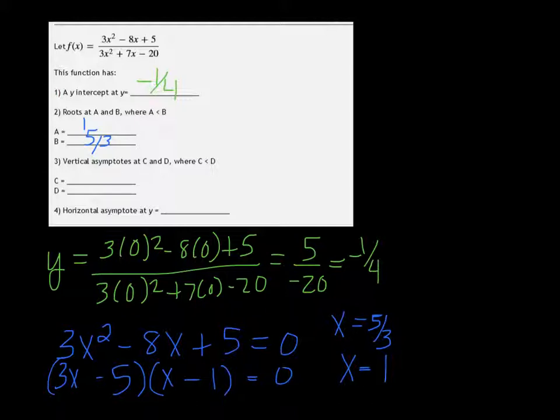Vertical asymptotes, we need to factor the top and the bottom. Or actually no, we just need to factor the bottom. We've already got the top anyway.